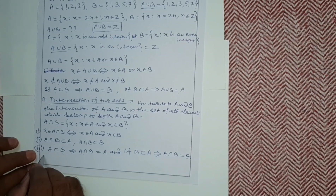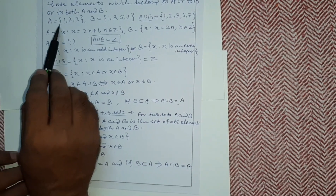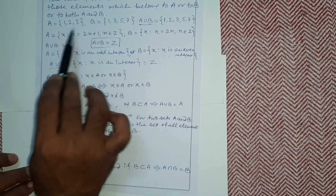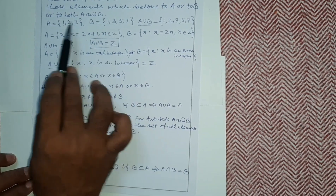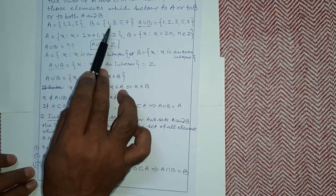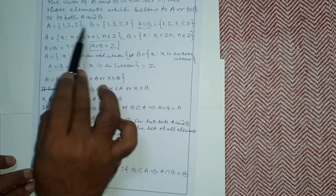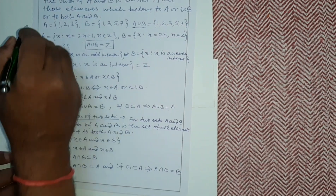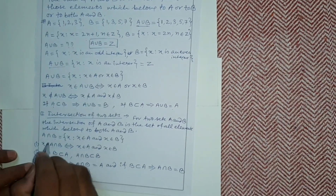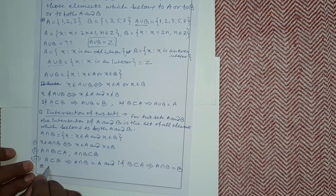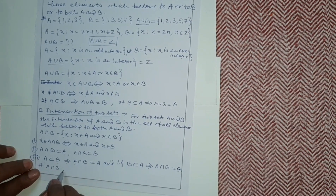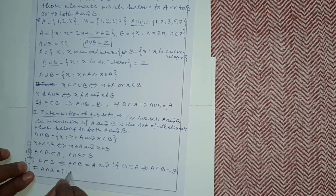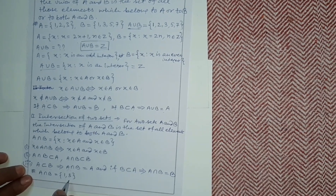Let us verify using the first example: A = {1, 2, 3} and B = {1, 3, 5, 7}. For A intersection B, we need common elements. Looking at both sets, 1 is in A and in B, and 3 is in A and in B. So A intersection B = {1, 3}.